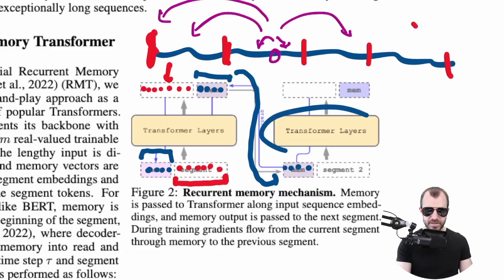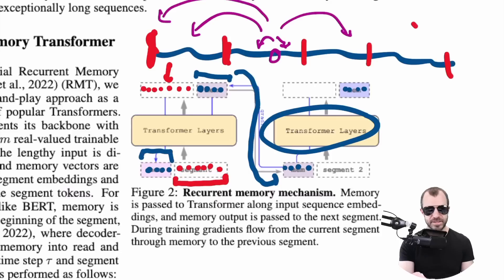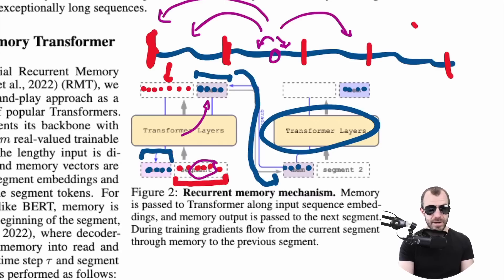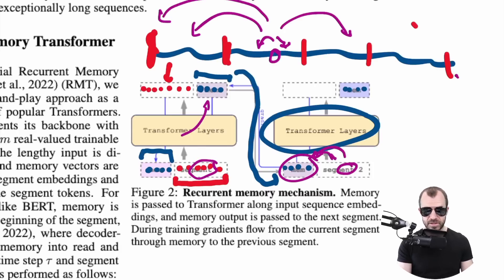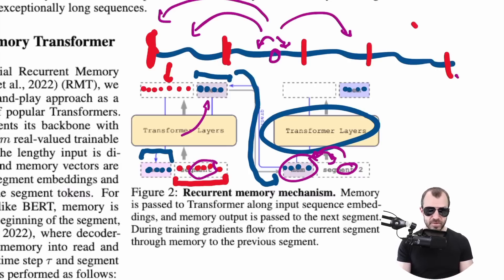This is how you can store information. If there's an important fact in the text, the transformer — by means of its attention mechanism across its layers — can store that fact into the memory tokens. In the next segment, if there's a question, it can consult that memory together with the question. That's technically self-attention into that memory to retrieve the stored fact. If it's not the last segment and there's no fact, it can simply pass the memory tokens through to the output unmodified.